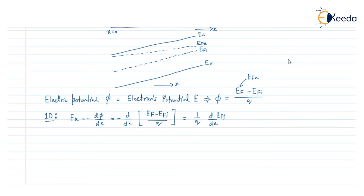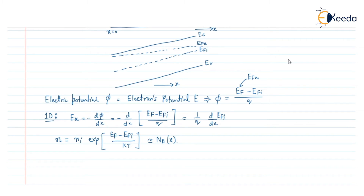We know that the electron concentration n equals NI · exp((EF − EFI) / KT), which equals the doping concentration ND, which is a function of x. From this equation, if we want to find EF − EFI, it will be KT · ln(Nd(x)).